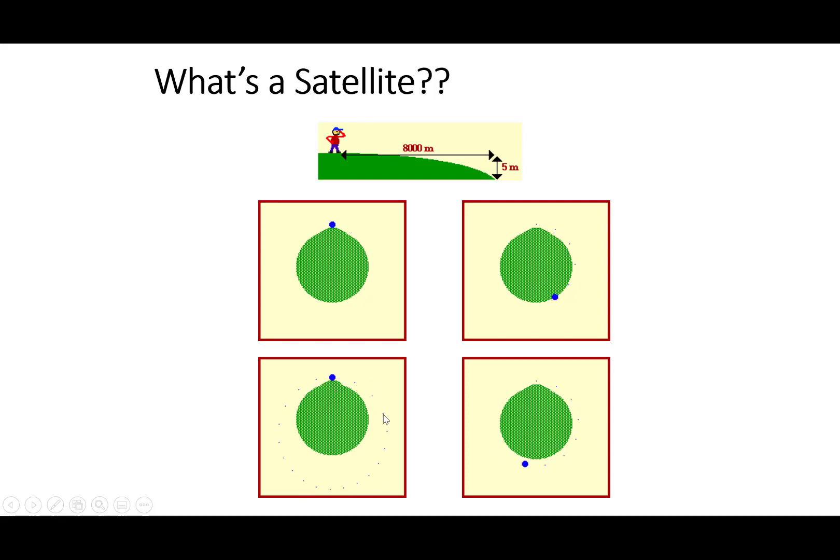Where the projectile is continuously falling towards the center of the Earth. But the Earth is falling at the same rate that the projectile is falling, or the Earth is curving at the same rate that the projectile is falling, or at a greater rate. So the projectile goes around an orbit. This is a circular orbit here, and this is an elliptical orbit here.